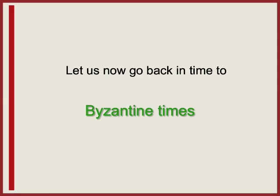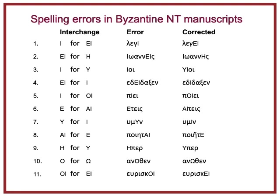Going back to Byzantine times: a list of spelling errors in Byzantine New Testament manuscripts shows the nature of the interchange. For instance, iota is used for epsilon-iota because the two sound alike—E. Epsilon-iota is used for eta because the two sound alike—E. Iota is used for omicron-iota because they sound alike. Epsilon is used for iota, alpha-iota for epsilon, eta for epsilon, and so on. All these types of error are the same as in Neo-Hellenic.